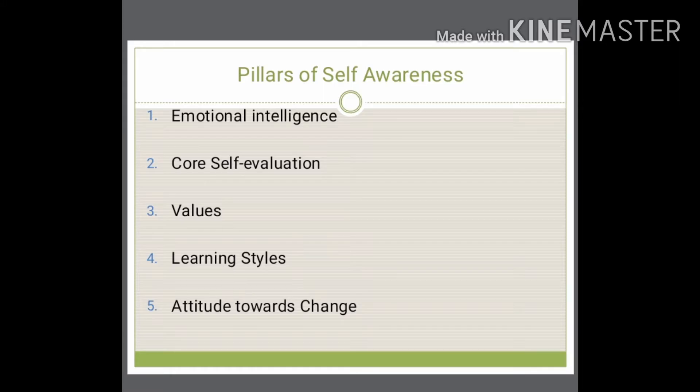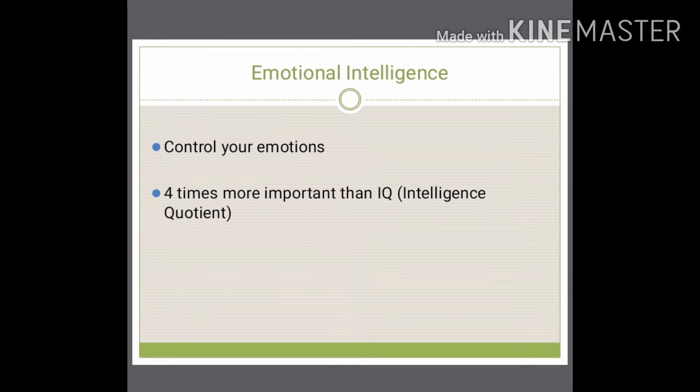What are the five pillars of self-awareness? One: emotional intelligence. Two: core self-evaluation. Three: values. Four: learning style. Five: attitude towards change. So, emotional intelligence — how fast can one recognize and diagnose their own emotions?